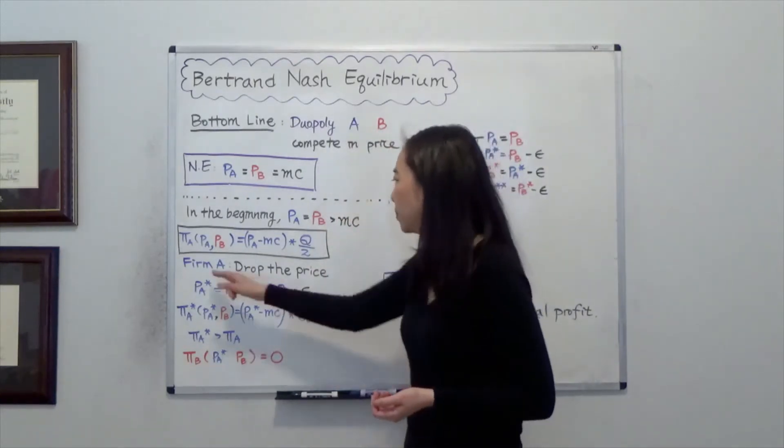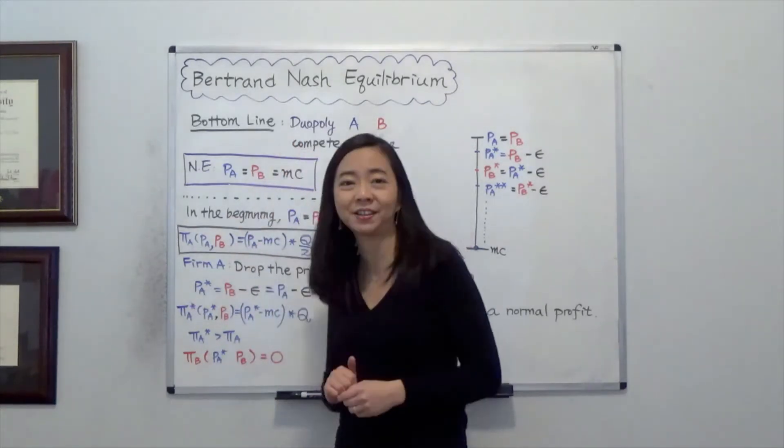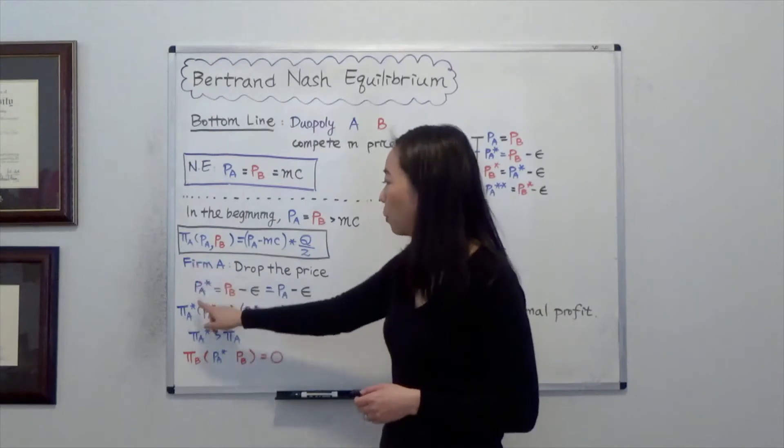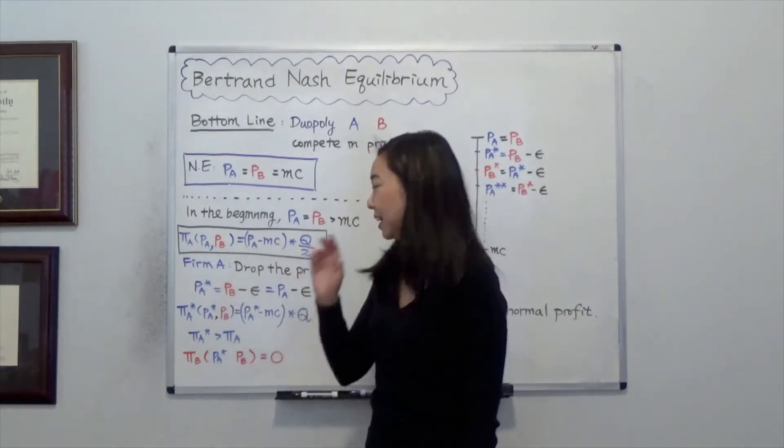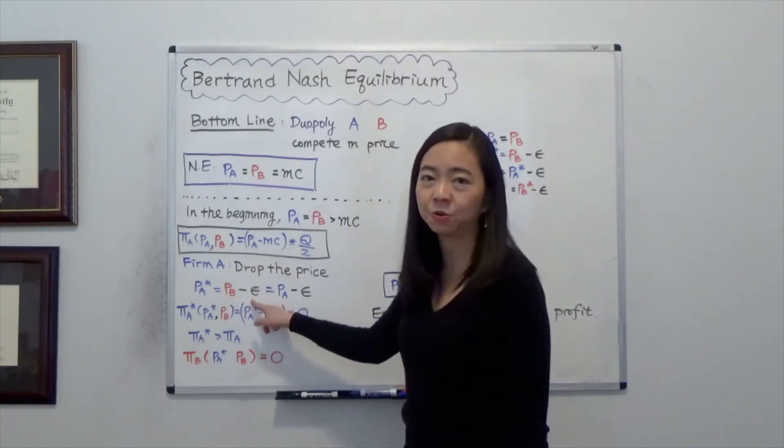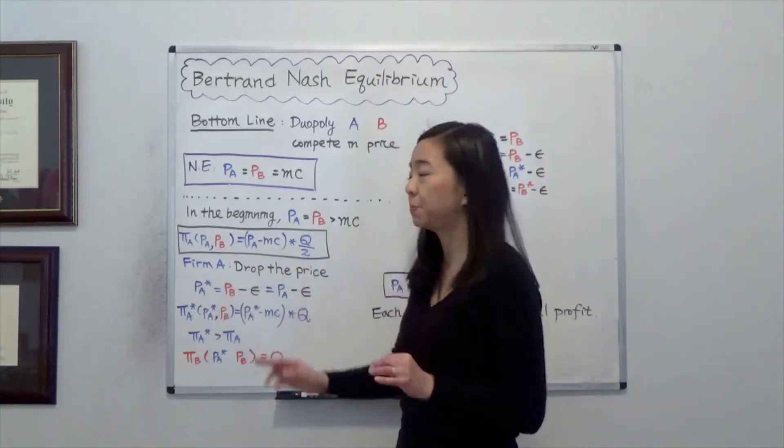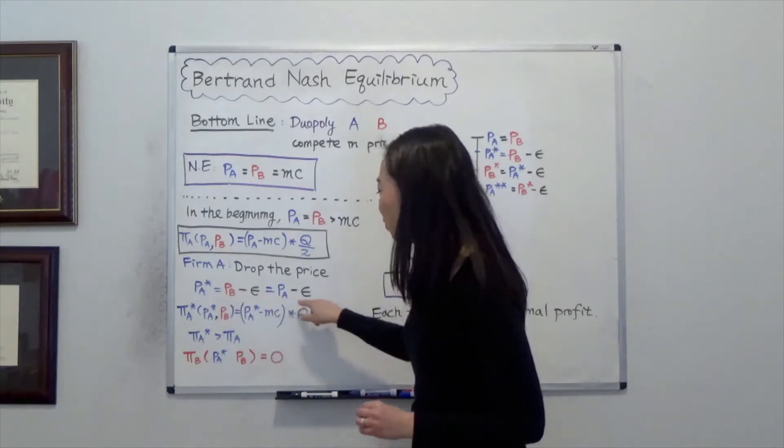Now suppose firm A asks themselves, can we do better by lowering the price? Because we're competing in price. So suppose firm A drops the price, so now we have a new price where PA star, that's the new price, that equals PB minus epsilon. So just a tiny bit lower than the price of firm B. And remember in the beginning PA was equal to PB, so the price was also just a tiny bit lower than our original price.